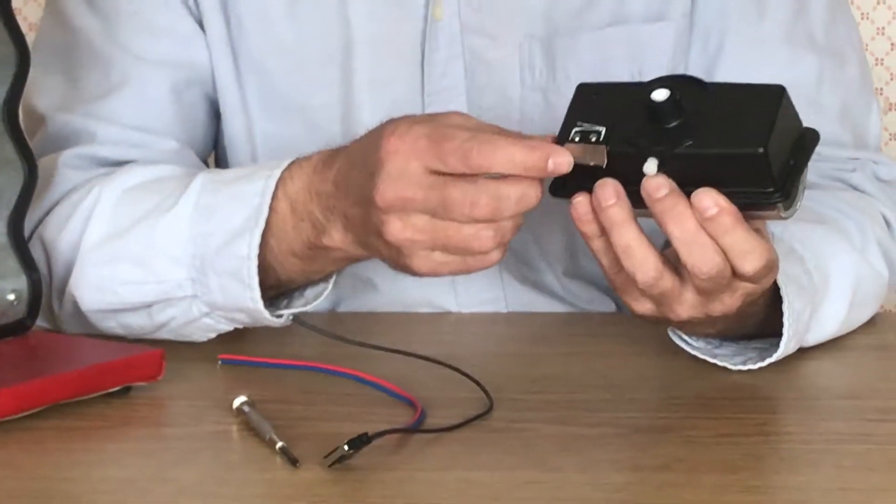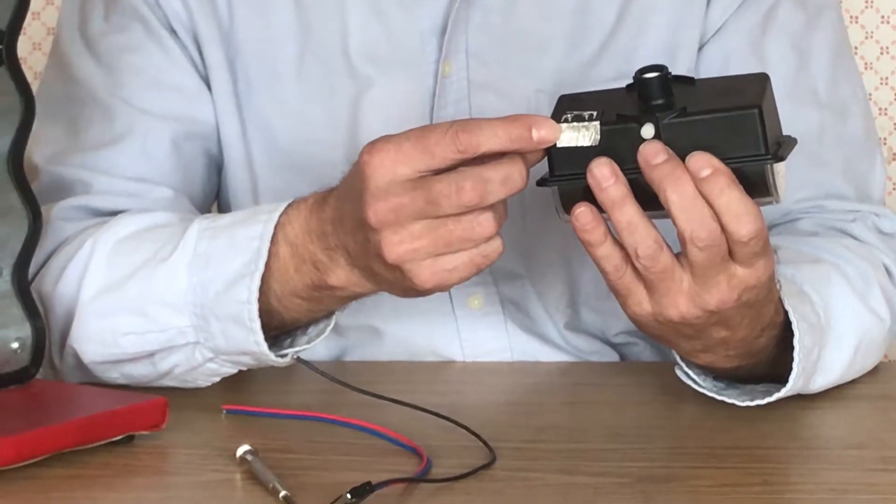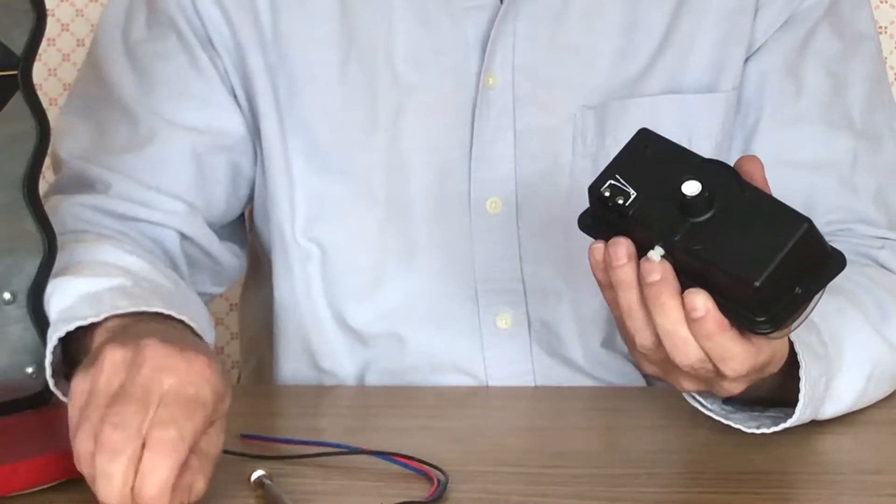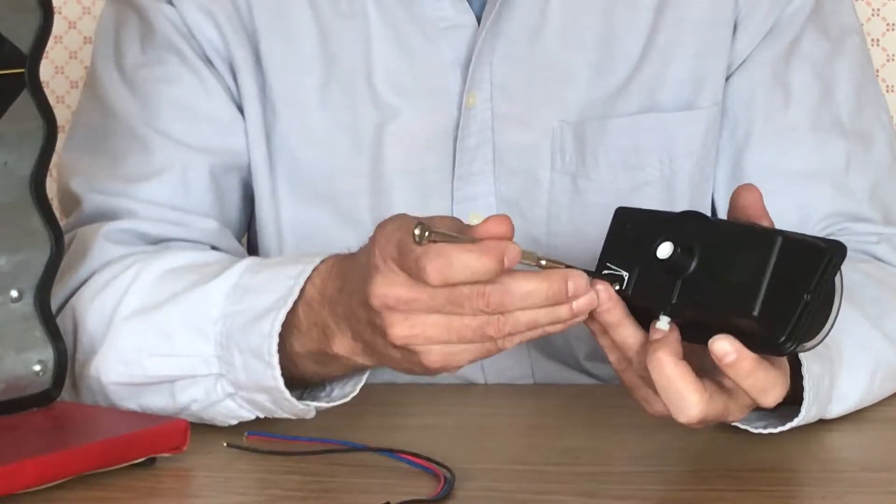You will notice a foil tape on the body covering the pocket where the switch will be inserted. Remove this foil and the two mounting screws.